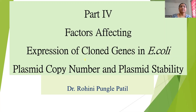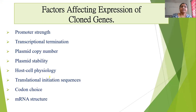Welcome. We are learning about the factors affecting expression of the cloned genes in E. coli. Now we are going to learn about plasmid copy number and plasmid stability, and how they are going to affect the expression of the cloned genes in E. coli. The factors we have already learned include the promoter strand, transcriptional termination, and translational initiation sequences.